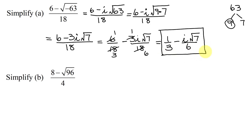One thing I want to point out: at this stage we could have simplified by factoring a 3 out of the numerator and then reducing, but I think it's a lot easier to separate it into two different terms.